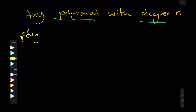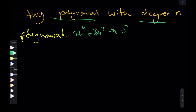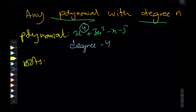A polynomial is a function in which you're raising x to some whole number power — something like x to the four plus three x squared minus x minus five. Also to note: the highest power of x in a polynomial is called the degree. So this is a degree four polynomial.